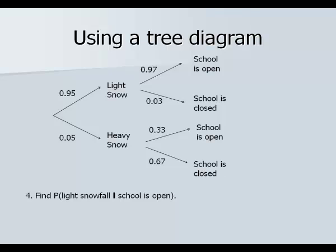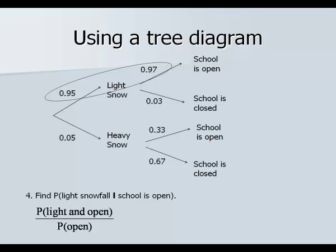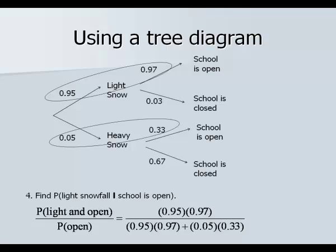Question four asks: probability of a light snowfall given that school was open. The formula puts the probability of both on top, divided by the probability of the given, which is open. The probability of light and open is 0.95 times 0.97 on top. The probability of being open uses both paths: 0.95 times 0.97, plus 0.05 times 0.33, added up on the bottom. Multiply and divide: you should get 0.982 or 98.2 percent.